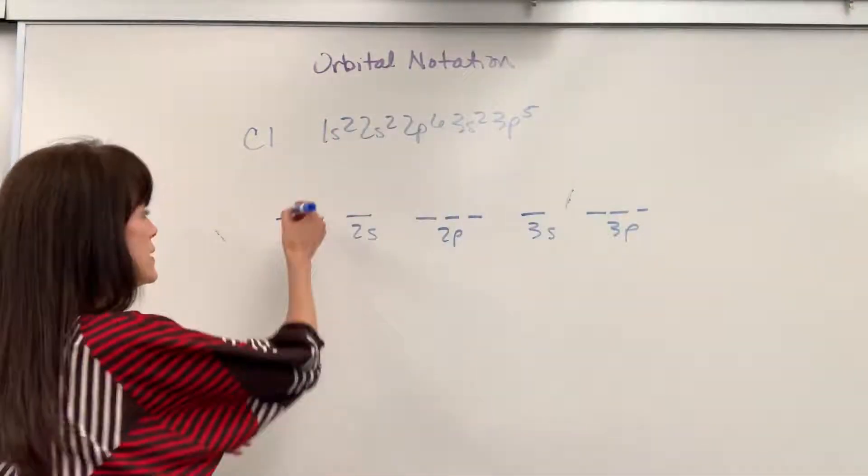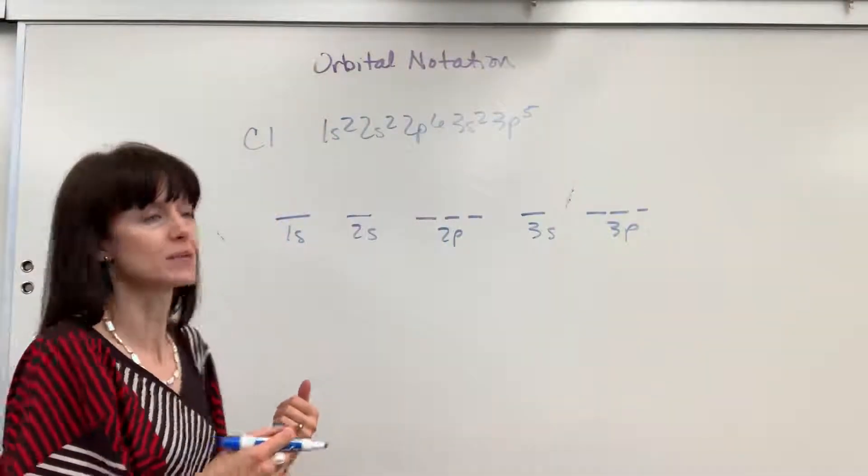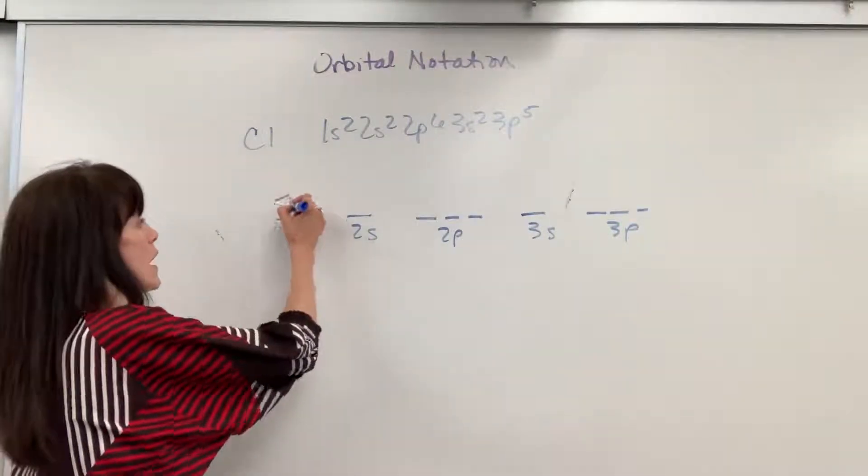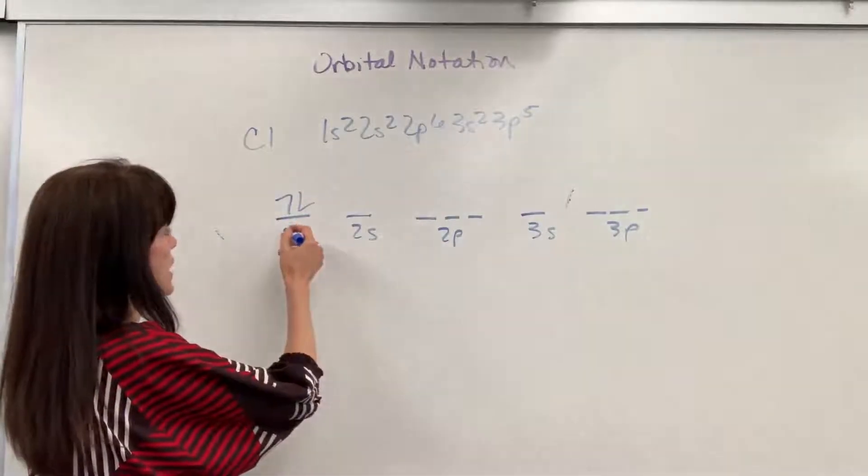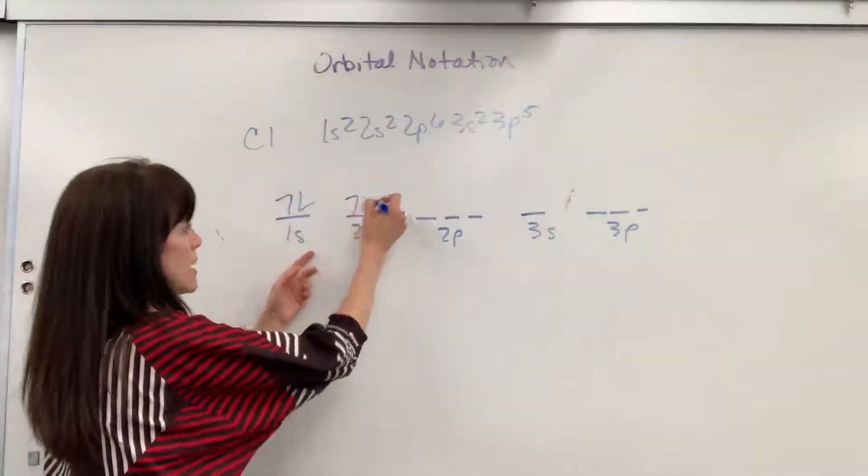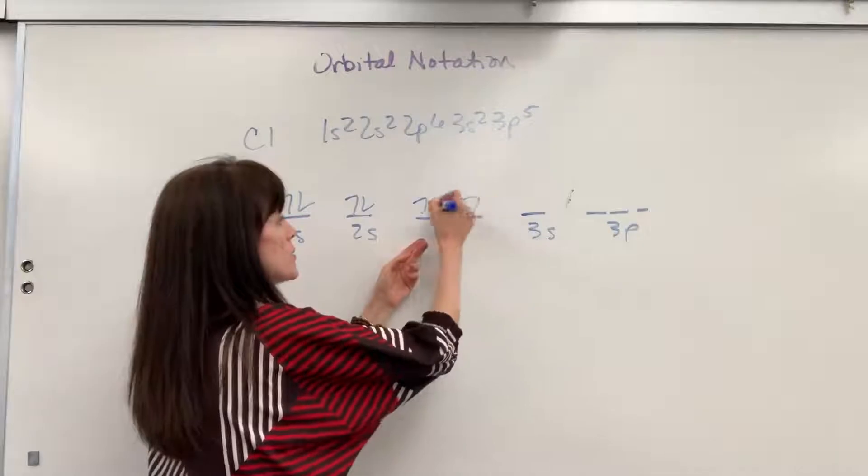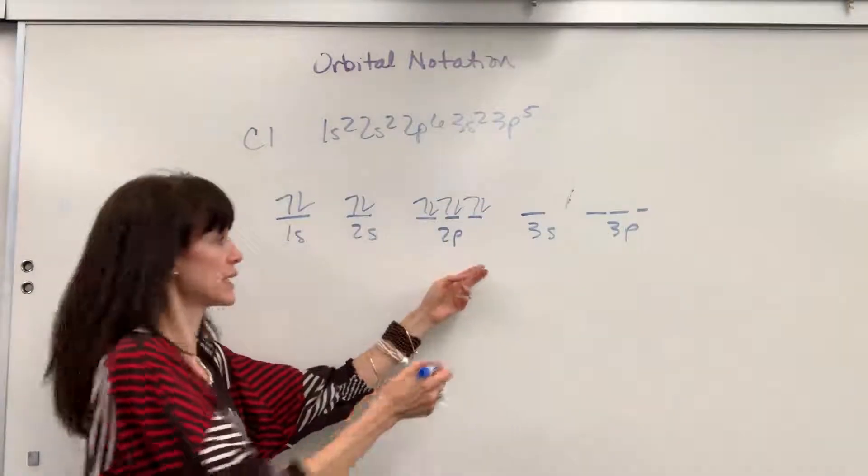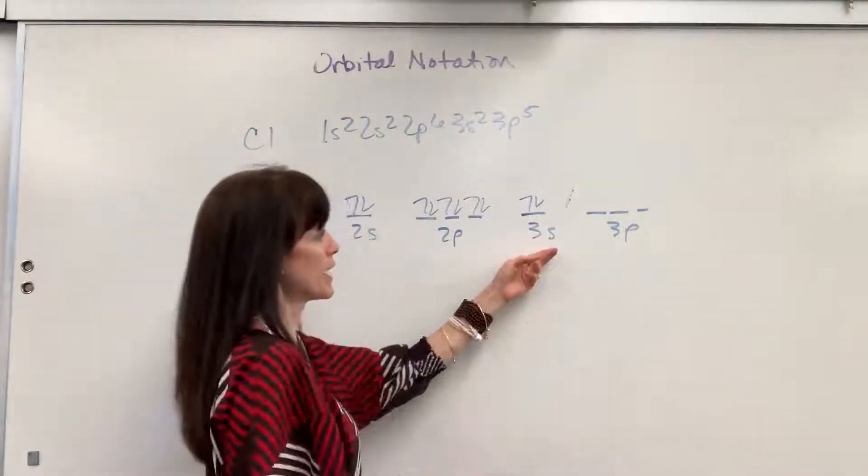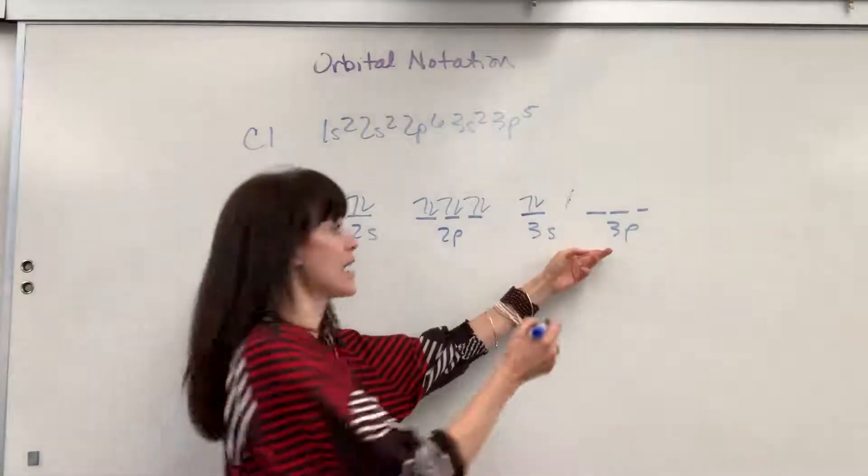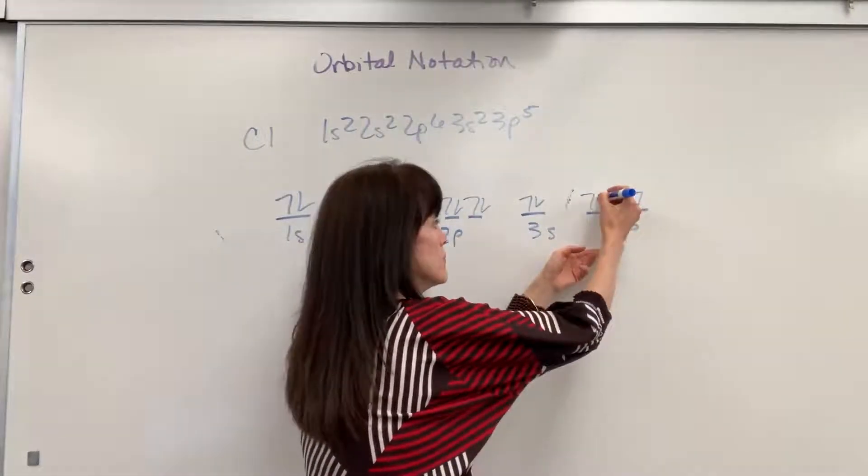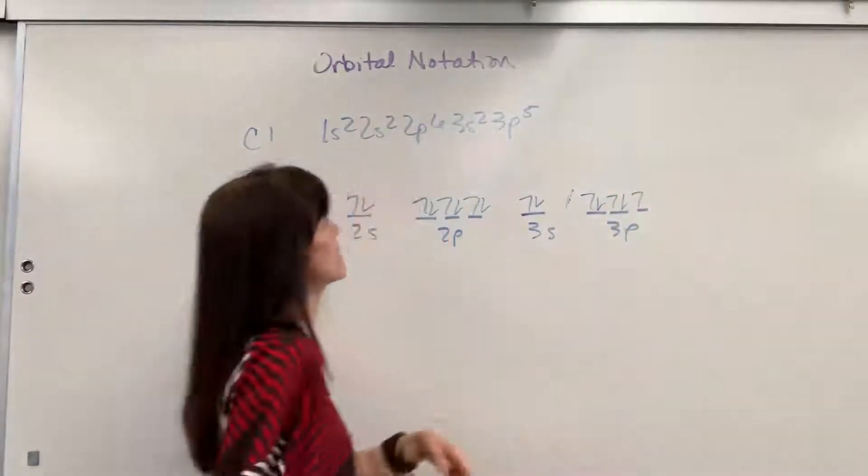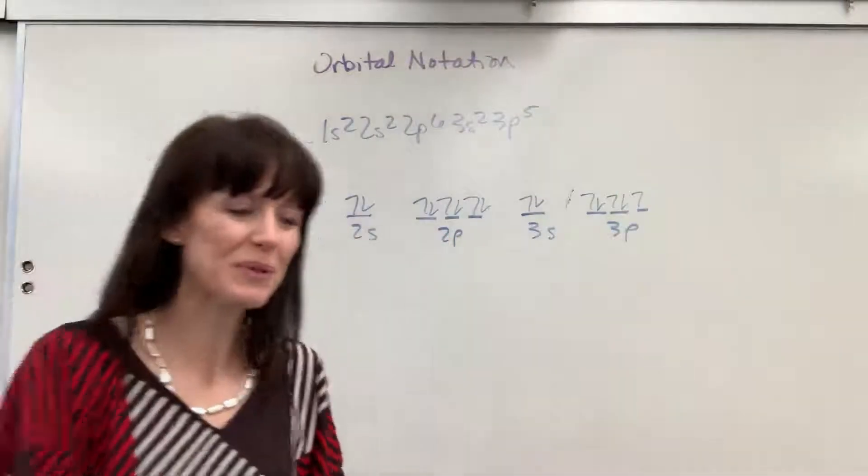And then we can fill in. So Aufbau principle, we always start from the lowest energy level and fill. Pauli exclusion principle, one spins up, one spins down. So we've got our 1s2, 2s2, up, up, up, down, down, down, 2p6, up, down, 3s2. And now my 3p5, I'm going to use Hund's rule. Up, up, up. Now I double up, down, down. And there you have it. Orbital notation.